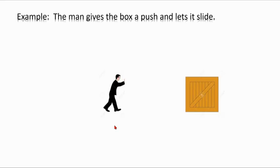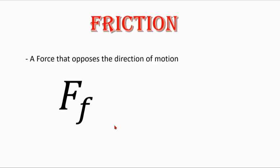So he gives the box a push with his applied force and he lets it slide. You notice the box eventually comes to a stop. So what force caused it to do that? What force caused it to slow down? And that would be the friction force. And friction is a force that opposes motion.